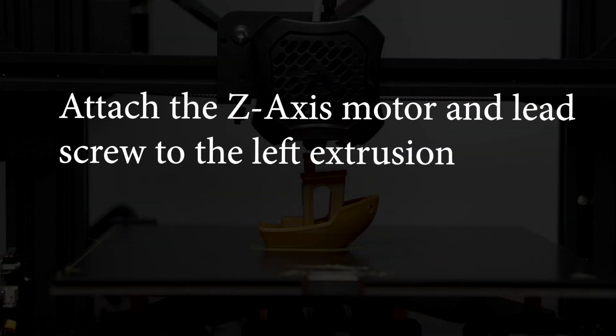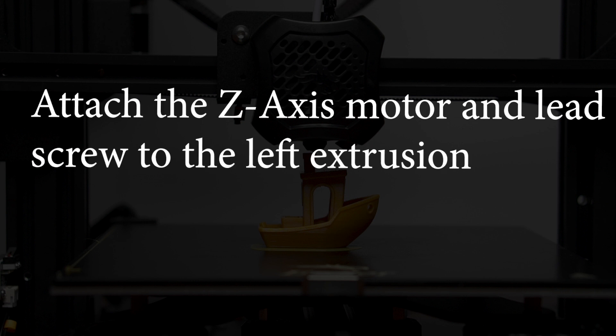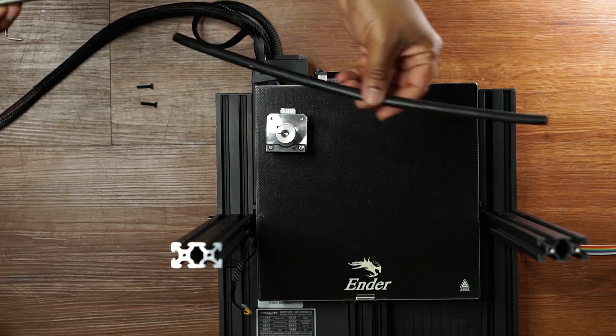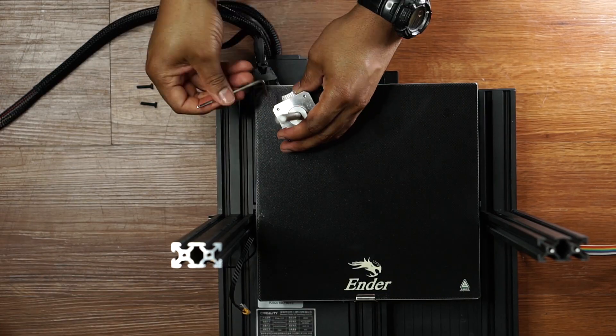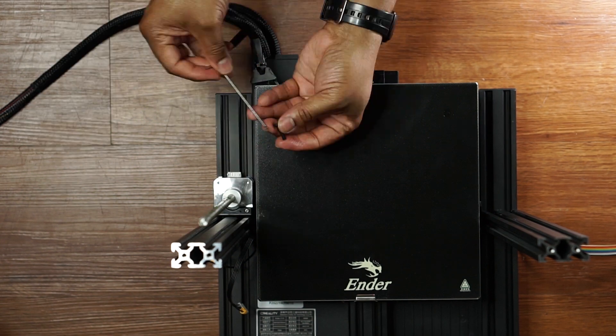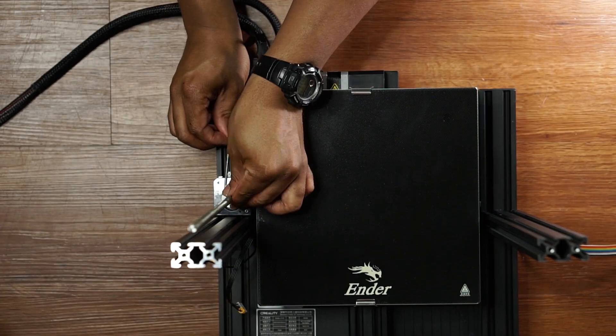Next attach the z-axis motor and lead screw to the left extrusion. Now we're putting that lead screw and motor together and attaching it to that left extrusion.